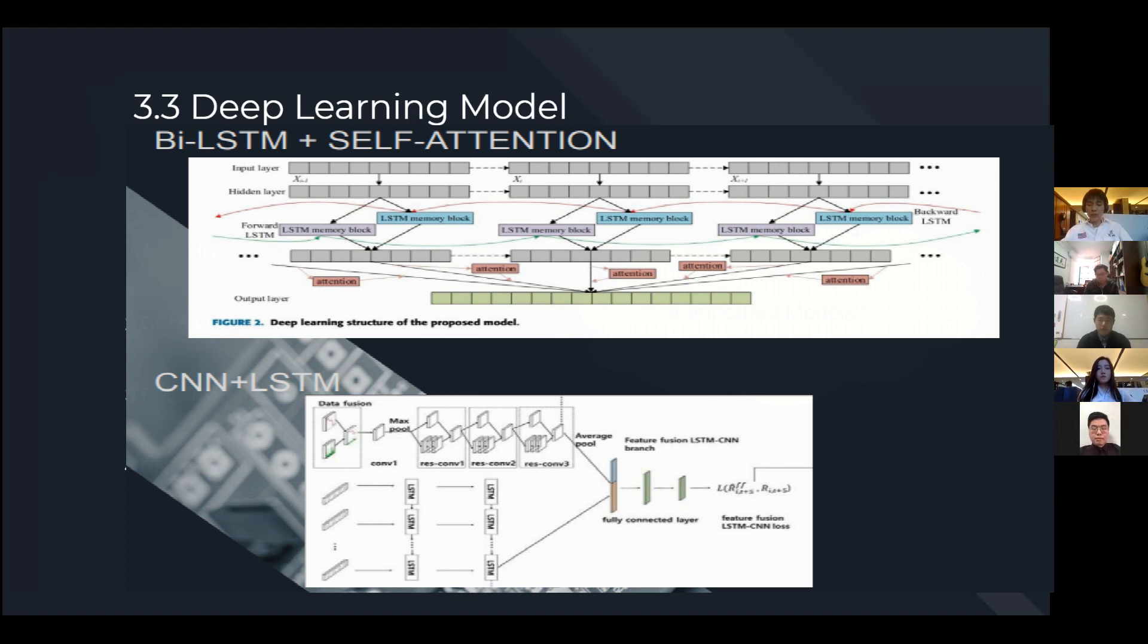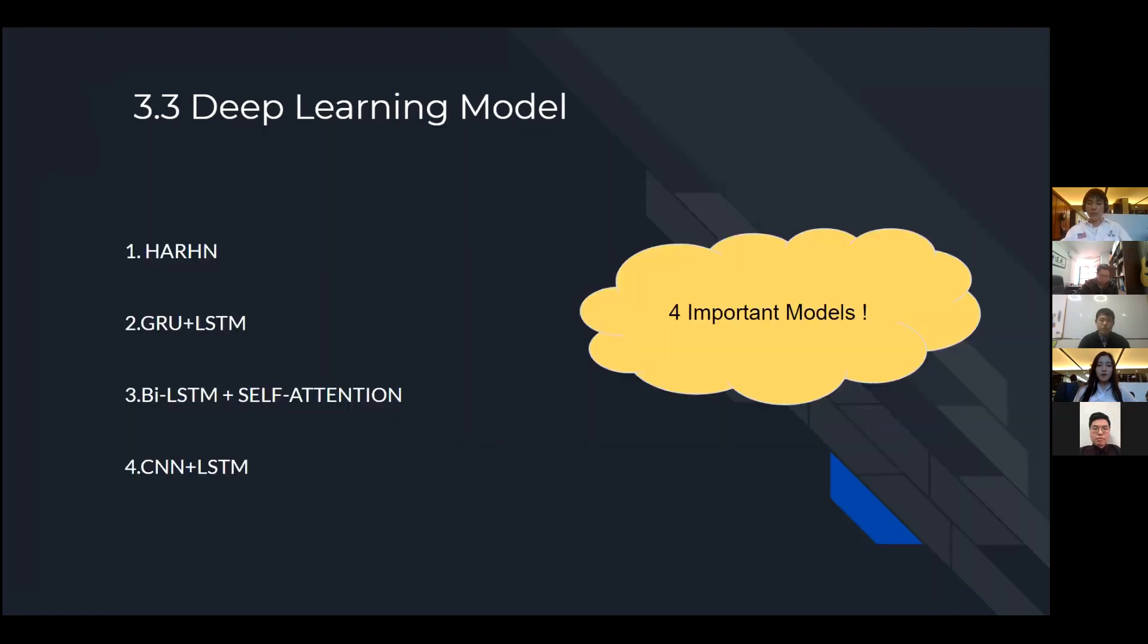The final one is a convolution neural network combined with long short-term memory. The candlestick image first goes through a multi-convolution and pooling layers. The time series data like open, high, low, close, and technical indicators goes through the multi-LSTM layers at the same time. Then, combine the output of CNN and LSTM to fit into three fully connection layers. All the flow work figures of these four models can be found at Appendix 1.